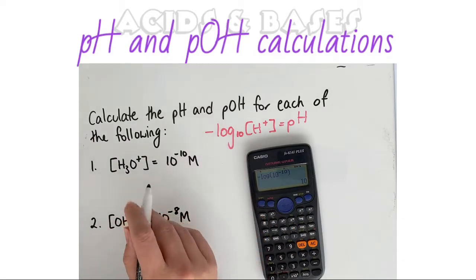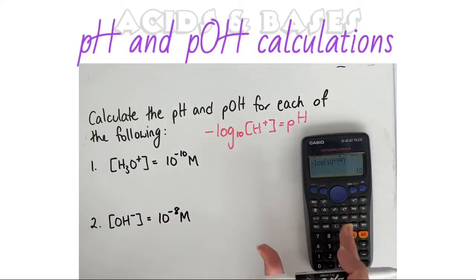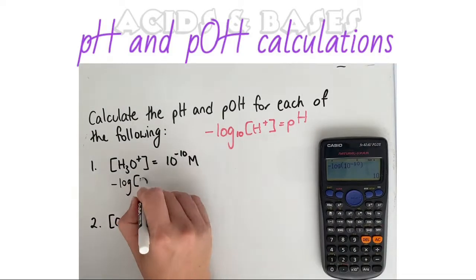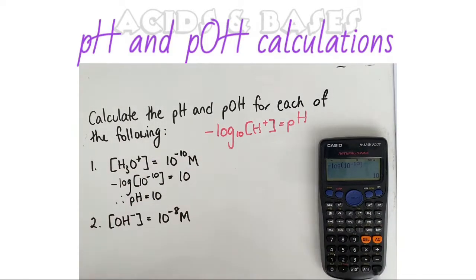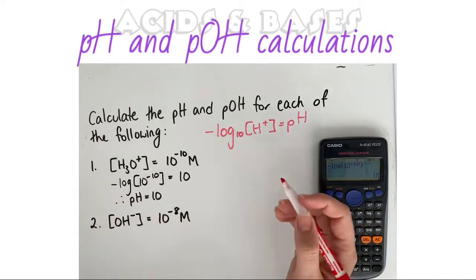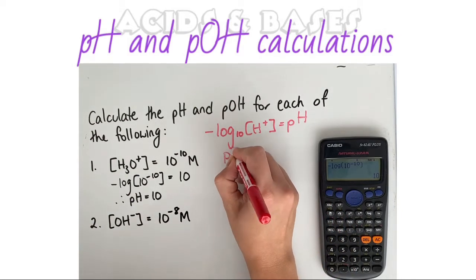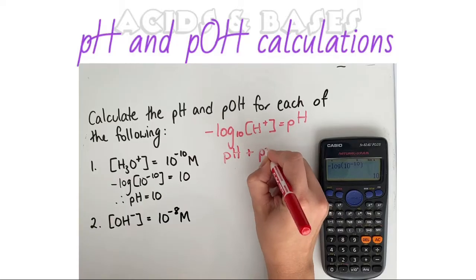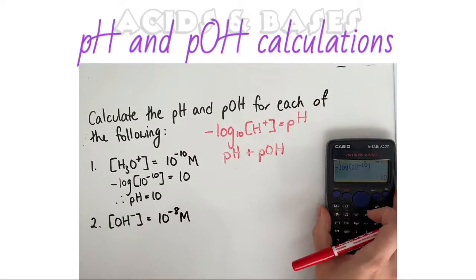So in this example, using that formula, we end up with a pH of 10. Now we also know the other formula we need to remember is that our pH plus our pOH is equal to 14.